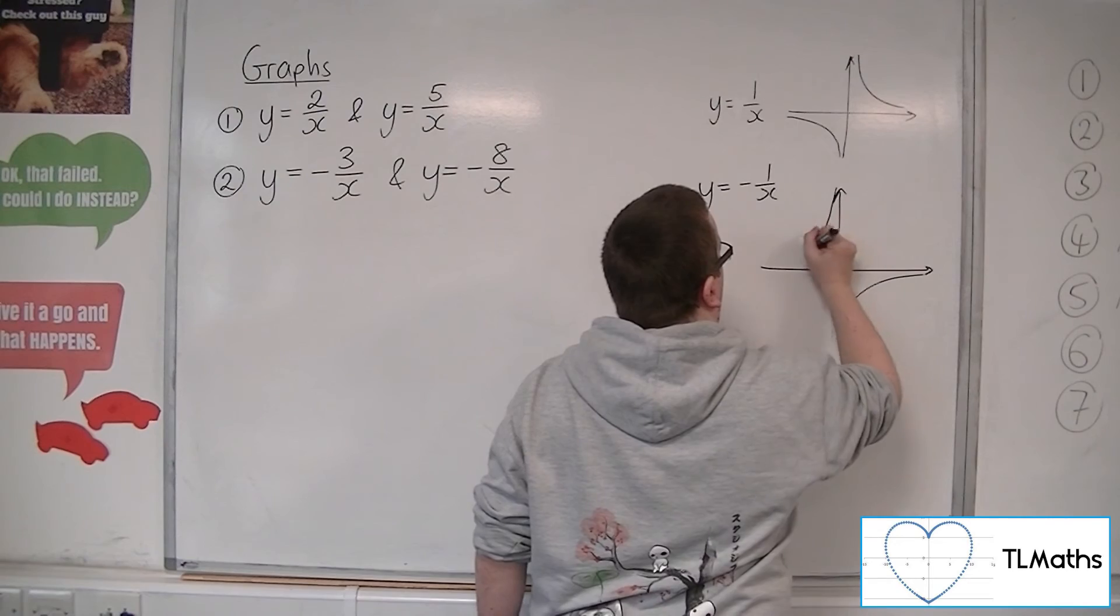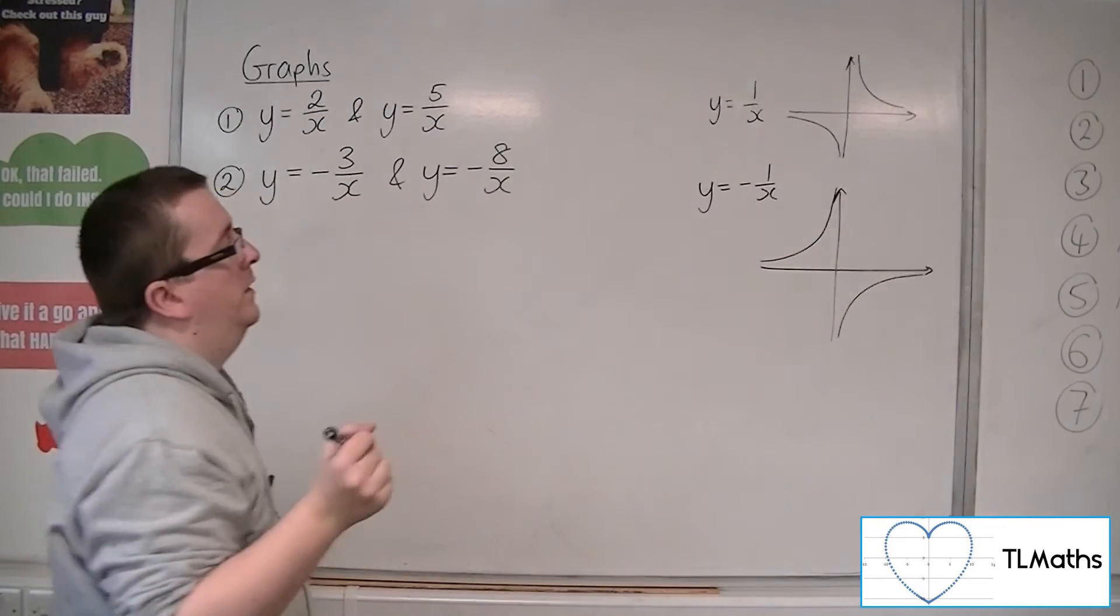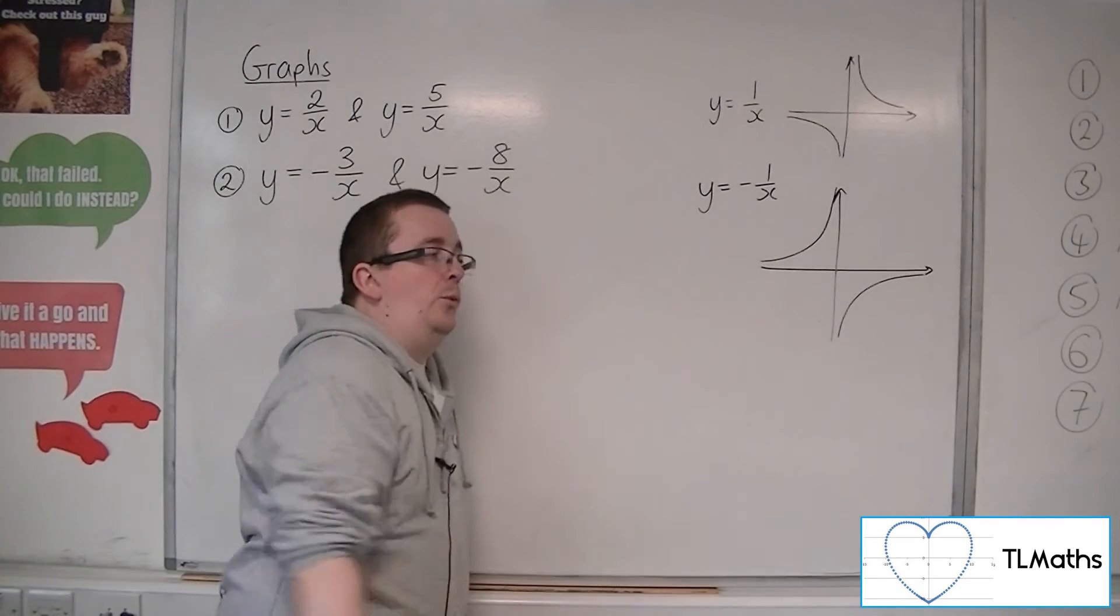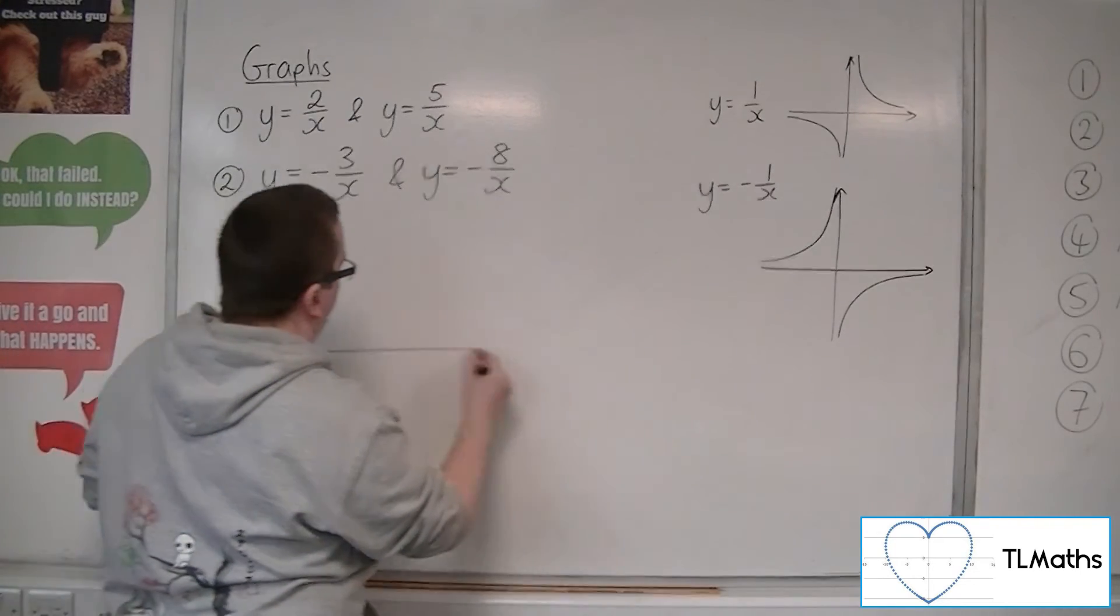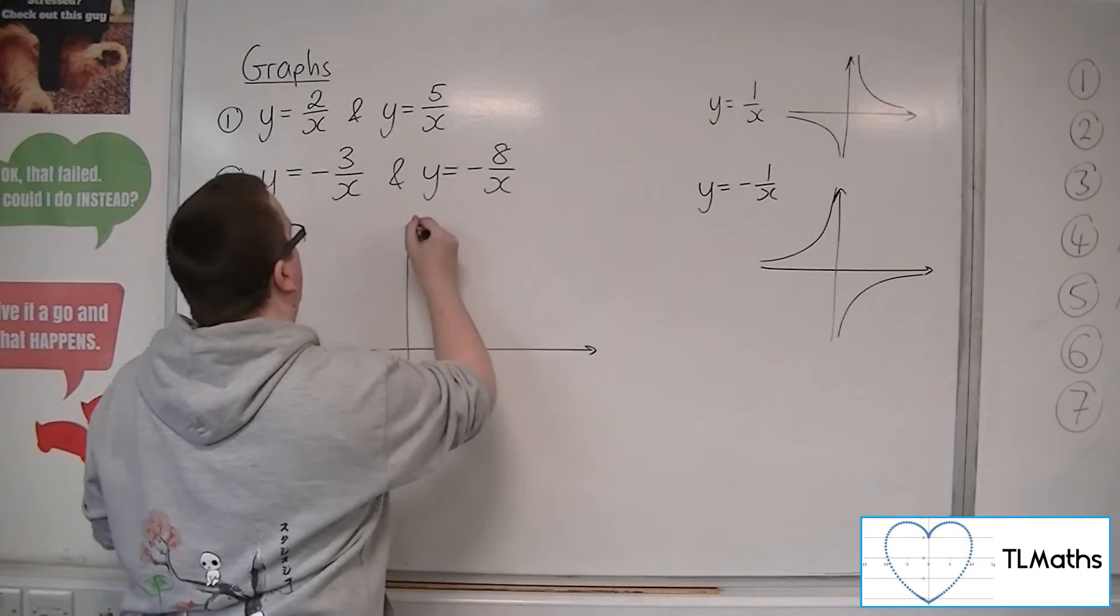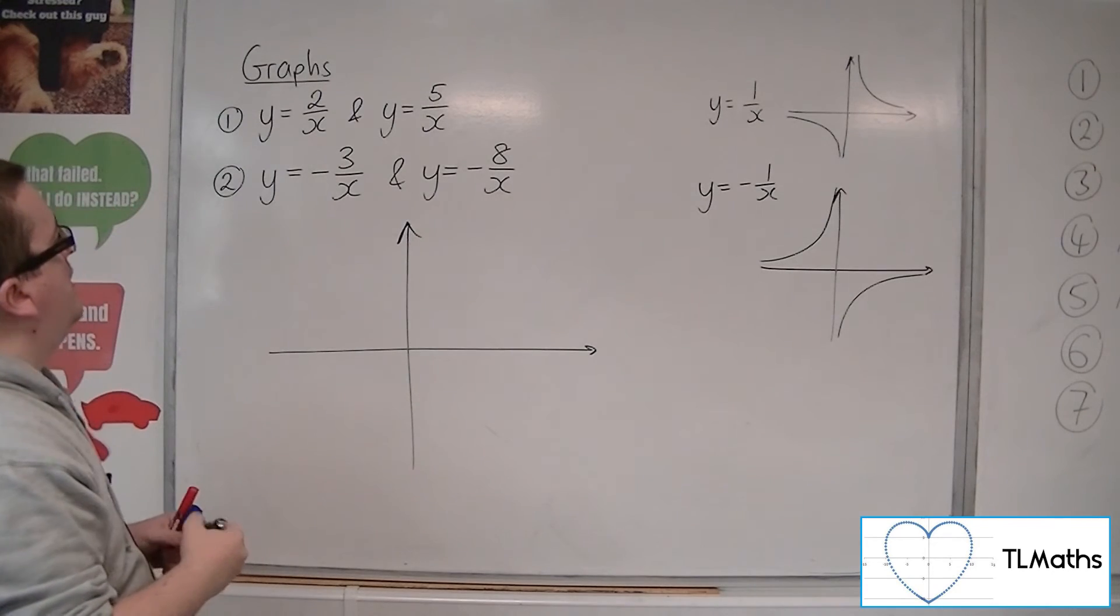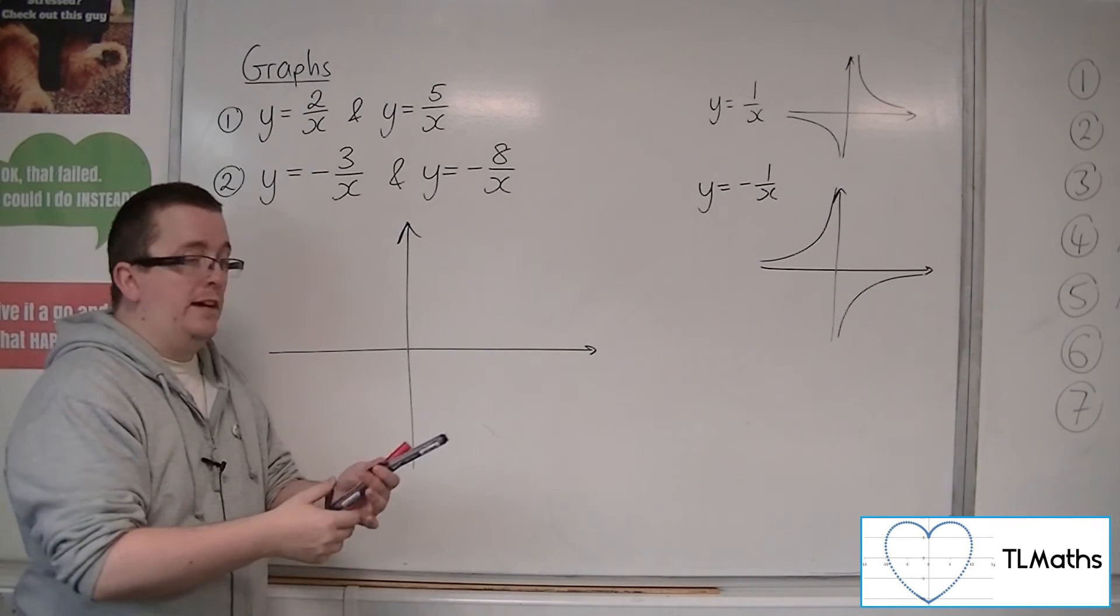This part of the graph that was negative will be made positive by putting that minus sign in front. And so the graph will look something like that. Okay? So this is what that minus sign will do.